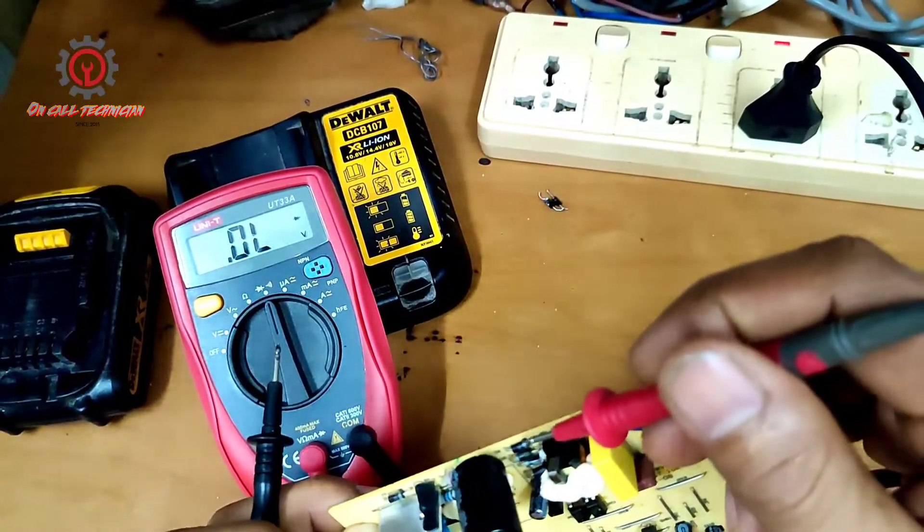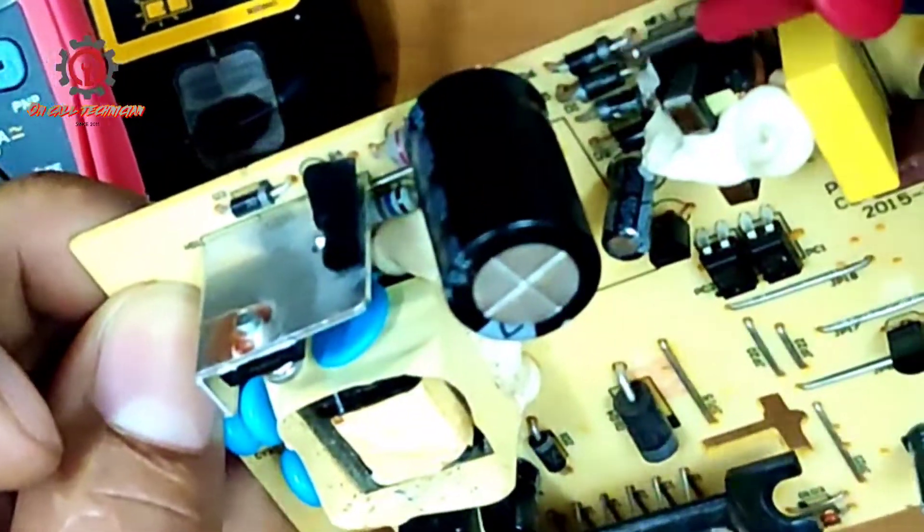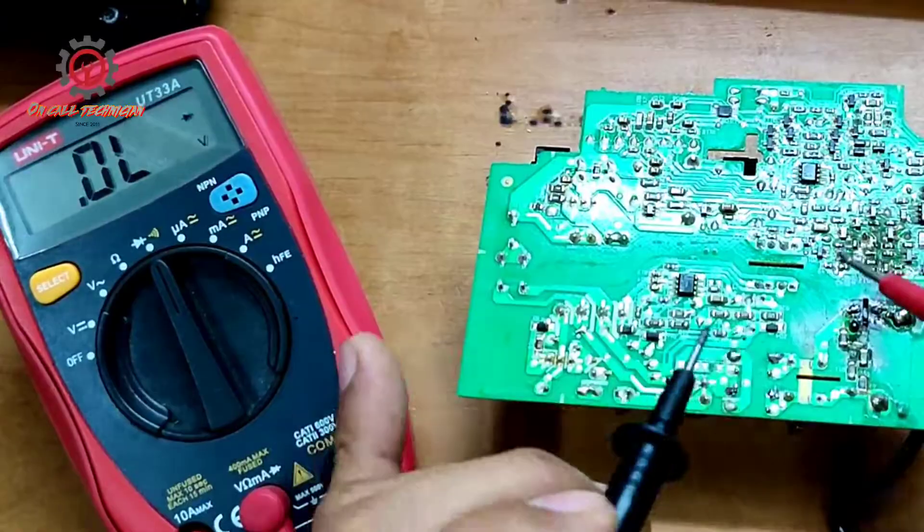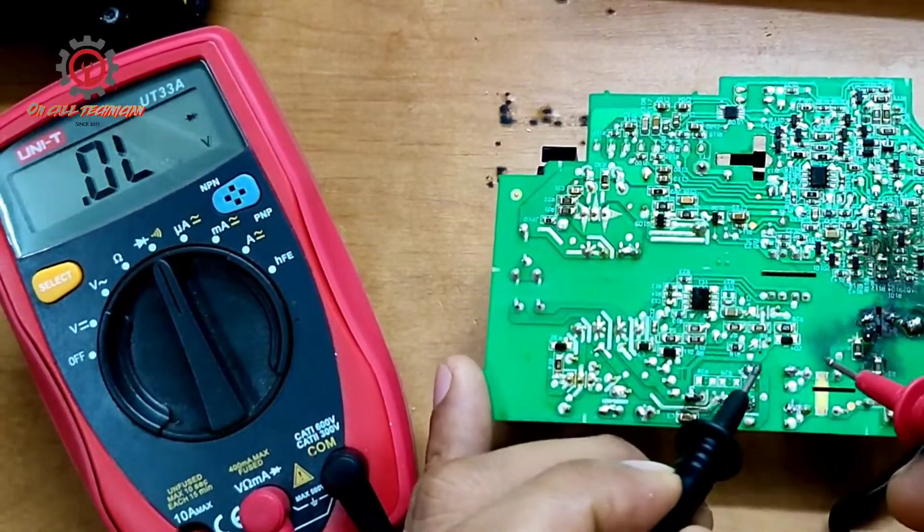For example, this one, this side here is the negative and this side here is the positive, and we're going to check one by one.